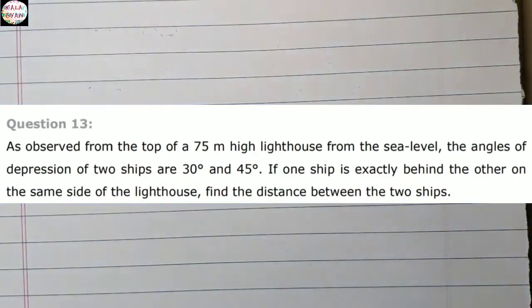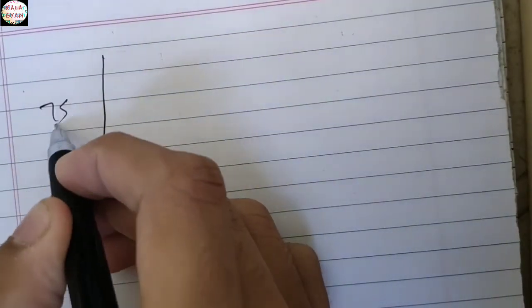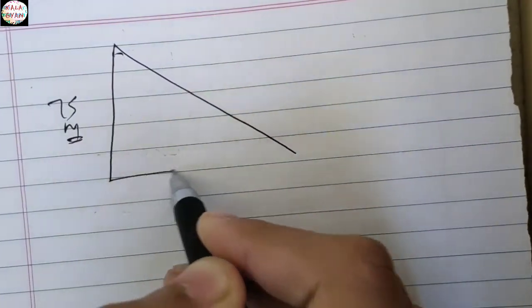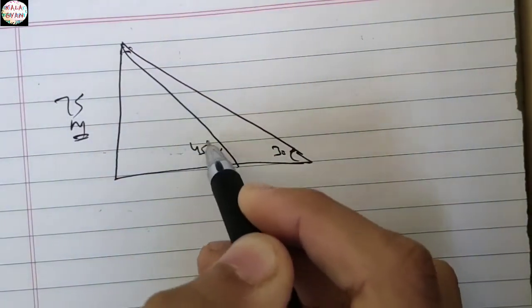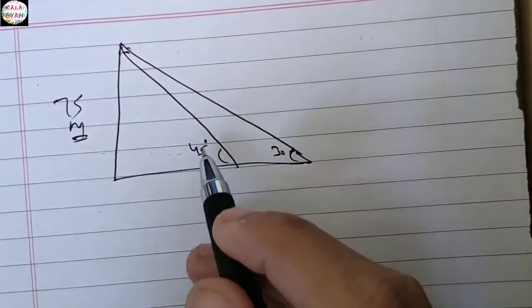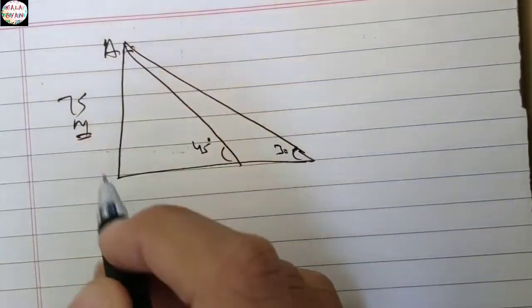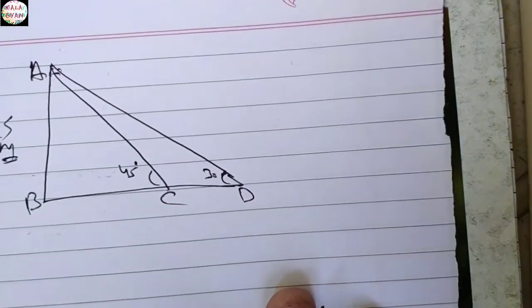हमने two ships का difference find out करना है। इसे easy बनाने के लिए diagram बना लेते हैं। एक 75 meter का lighthouse है जो angle of depression बना रहा है — पहले 30 degree का और फिर 45 degree का — ये दो ships हैं। हमें इन ships के बीच की distance निकालनी है। हम points देते हैं: A, B, C और D।